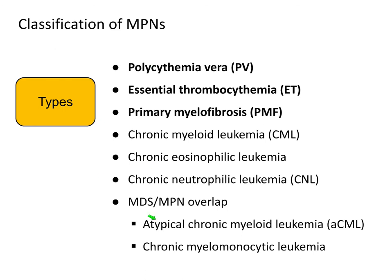There are a number of different types of MPNs. Today's talk will focus on the three so-called classic MPNs: polycythemia vera, or PV; essential thrombocytemia, or ET; and primary myelofibrosis, or PMF. These are grouped together in part because in each of these diseases it is very common to have a mutation in the JAK2 gene. They are distinct diseases but share a number of clinical features.